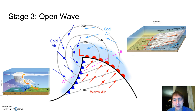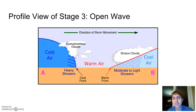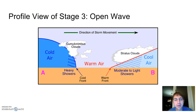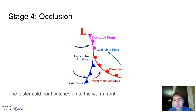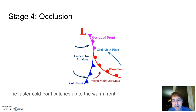As you can imagine, this doesn't last forever. The cold front continues moving faster, and you can predict what happens: it keeps going and eventually catches up to the warm front. In a profile view at stage three, you can see a cold front, a small gap of warm air at the surface, and then a warm front to the east — both fronts moving in the same direction, but the cold front moving faster. When the cold front actually catches up to the warm front, we call that an occlusion. The counterclockwise flow around the low pressure center driven by the Coriolis effect is what's pushing it.